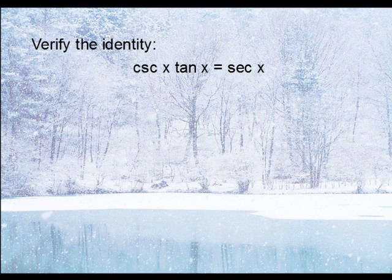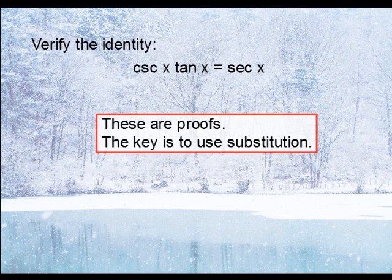For example, take this one here. It says verify the identity cosecant times tangent equals secant. These are proofs. I mean, this looks like an equation, but we're not going to treat it as such. You're going to treat this really as just two separate halves. You won't be adding or subtracting to both sides or multiplying and dividing. Because these are proofs, the key is to use substitution to show that the left side is equal to the right side.